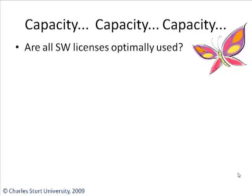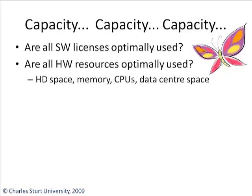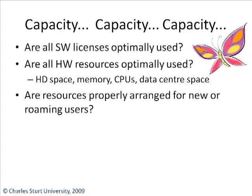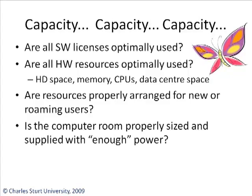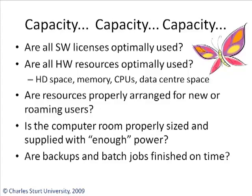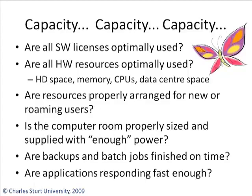Let's ask some questions: Are all your software licenses optimally used? Are all your hardware resources optimally used? We're talking hard disk space, memory, CPUs, accommodation, data center space. Are resources properly arranged for new or roaming users? If new users join your organization, are desktops already in place for them? Are licenses already installed for them? Is the computer room properly sized and supplied with enough power? What about backups and batch jobs — do they properly finish on time? And are applications responding fast enough? We're talking hardware, software, and network resources, and we're talking about performance.